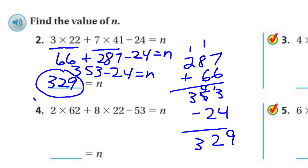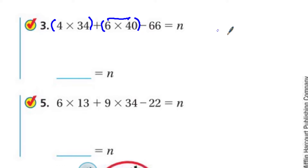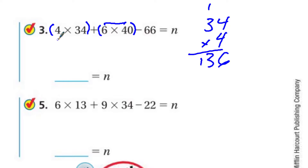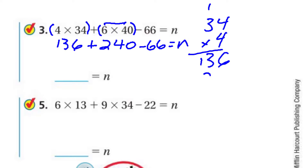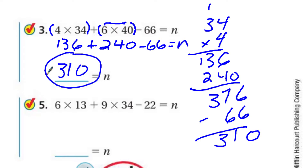Let's come over here to number 3. I've been underlining these — you can do that too to identify which operations to multiply. I'll do my work over here: 34 times 4 is 136. Plus 6 times 4 is 24, so that's 240. Then minus 66 equals n. Adding 136 plus 240: I need to make sure they're lined up — use grid paper to avoid alignment issues. That gives 376, minus 66. Regrouping: 310. And I circled the answer — n equals 310.